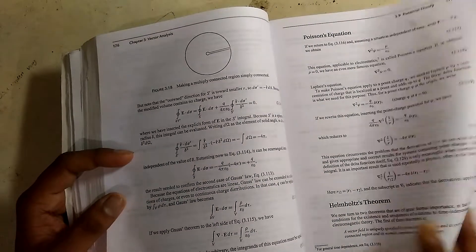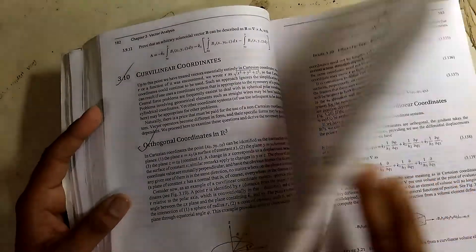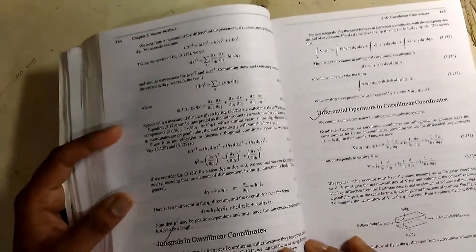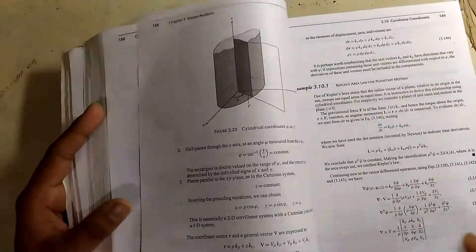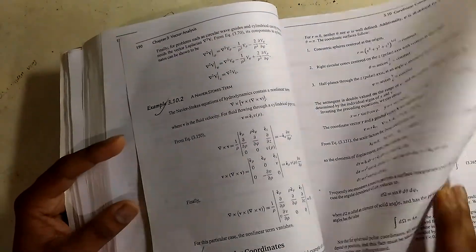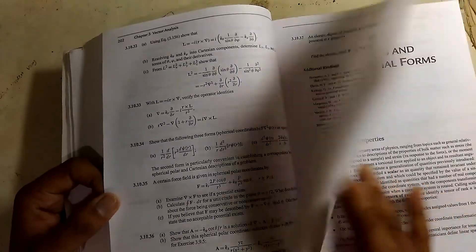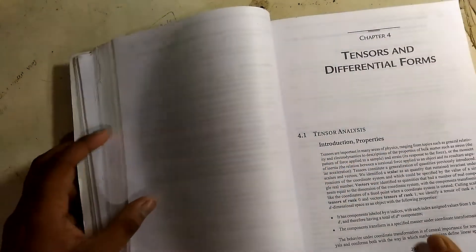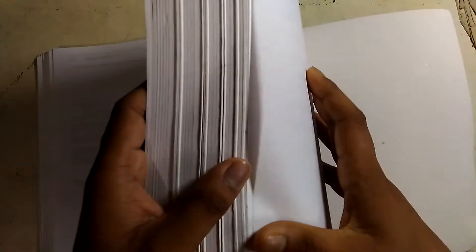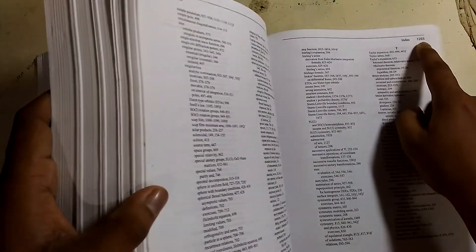There are lots of things covered in this book - tensors and differential forms. This book has like 1,200 pages, as you can see, 1,203. So there are lots of things and topics covered in a deep manner.